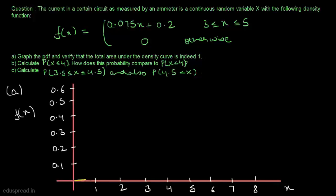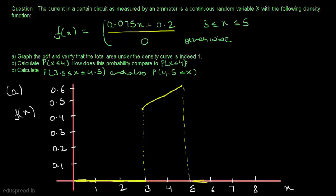So here f of x is equal to 0 till x equals 3. When x is between 3 and 5 we use the given expression: when x equals 3, f of x equals 0.425; when x equals 4, f of x is 0.5; and when x equals 5, f of x is 0.575. For all values of x greater than 5, f of x is equal to 0. This is how you graph the probability density function in this case.